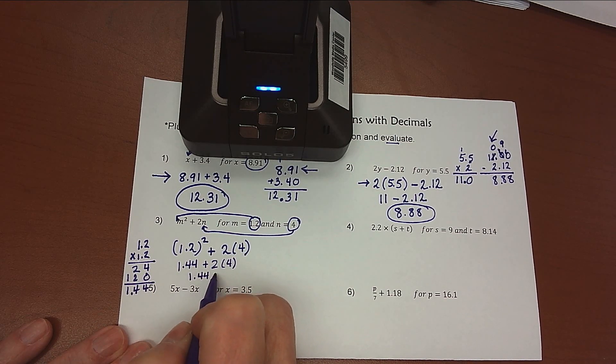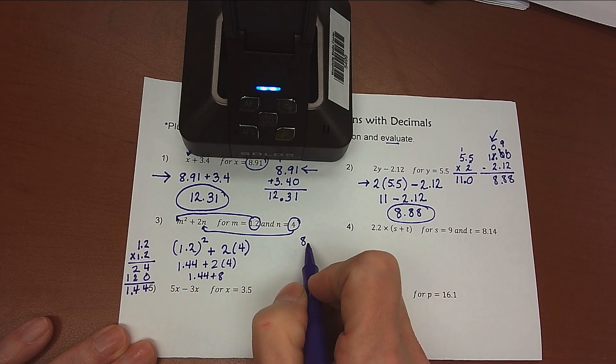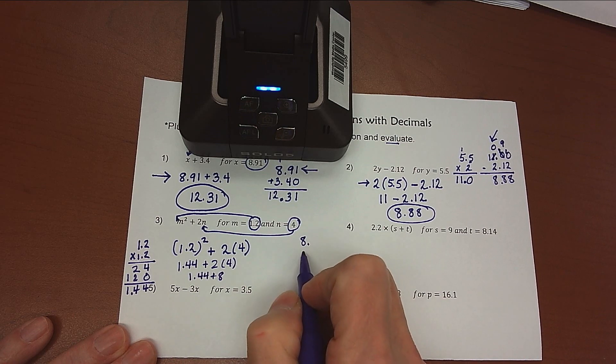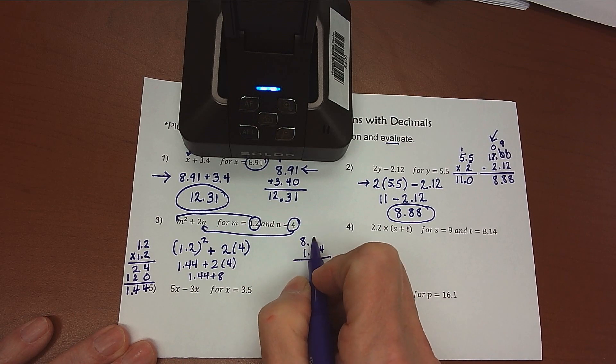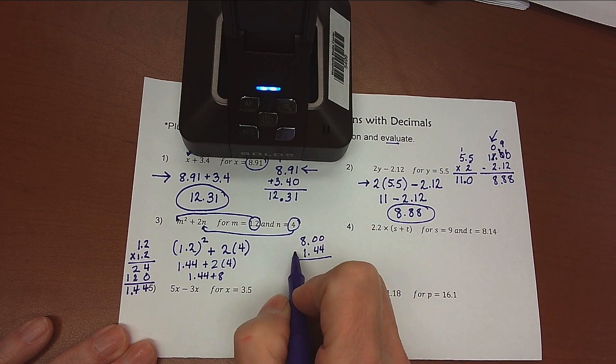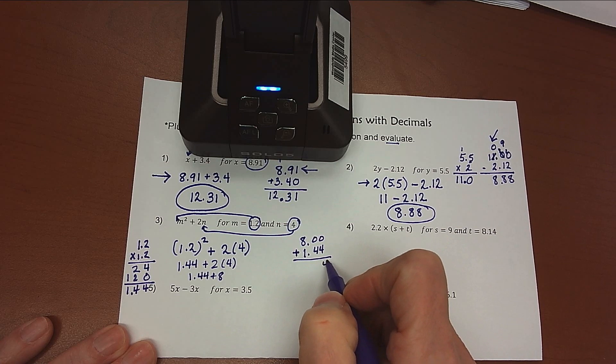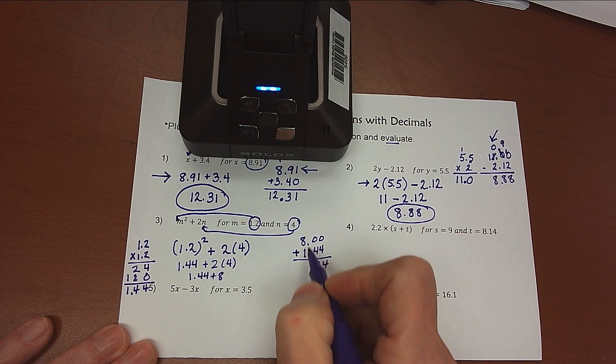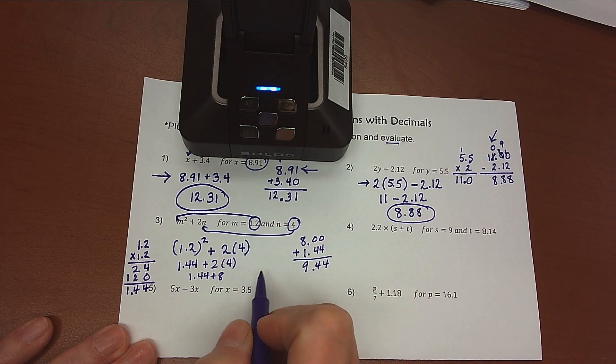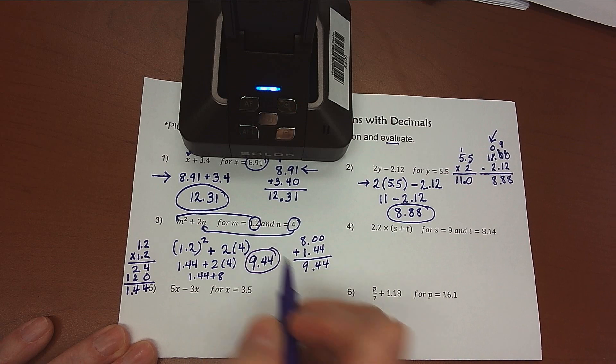So it's 1.44 plus 8. All right. 8 doesn't have a decimal point in it, so I'm going to put one at the end of that number. And we're adding 1.44. Add in a couple of 0s for placeholders. Remember that it's an addition problem. 4 plus 0 is 4. 4 plus 0 is 4. Bring that decimal point down. 8 plus 1 is 9. And so my answer is 9.44.